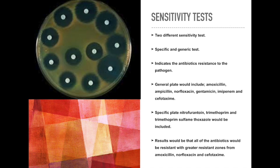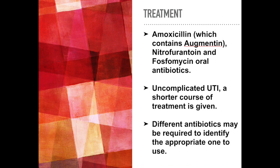From here, treatments are then determined for the particular case. Since E. coli is the cause of the UTI, antibiotics are typically the first line of treatment. Amoxicillin and nitrofurantoin are examples of oral antibiotics given to patients with E. coli-derived UTI infections. For uncomplicated UTI, a shorter course of treatment is given. With the increasing rate of antibiotic resistance, different antibiotics may be required to identify the appropriate one to use.